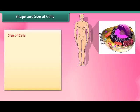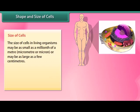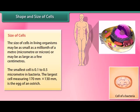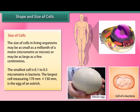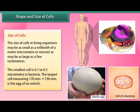The size of cells in living organisms may be as small as a millionth of a meter — a micrometer or micron — or as large as a few centimeters. The smallest cell is 0.1 to 0.5 micrometers, found in bacteria. The largest cell, measuring 170 mm × 130 mm, is the egg of an ostrich.